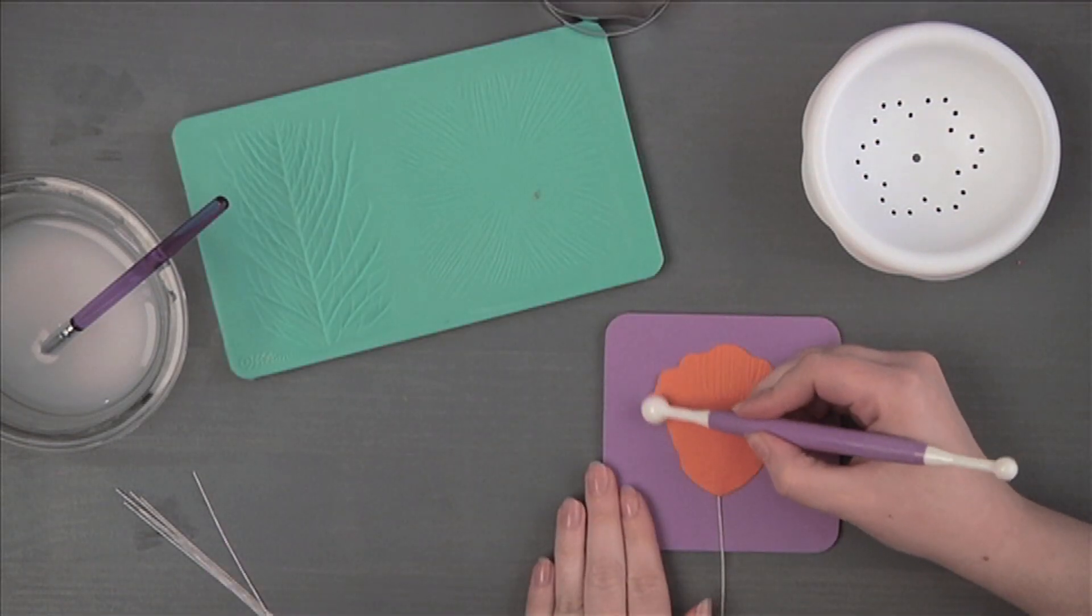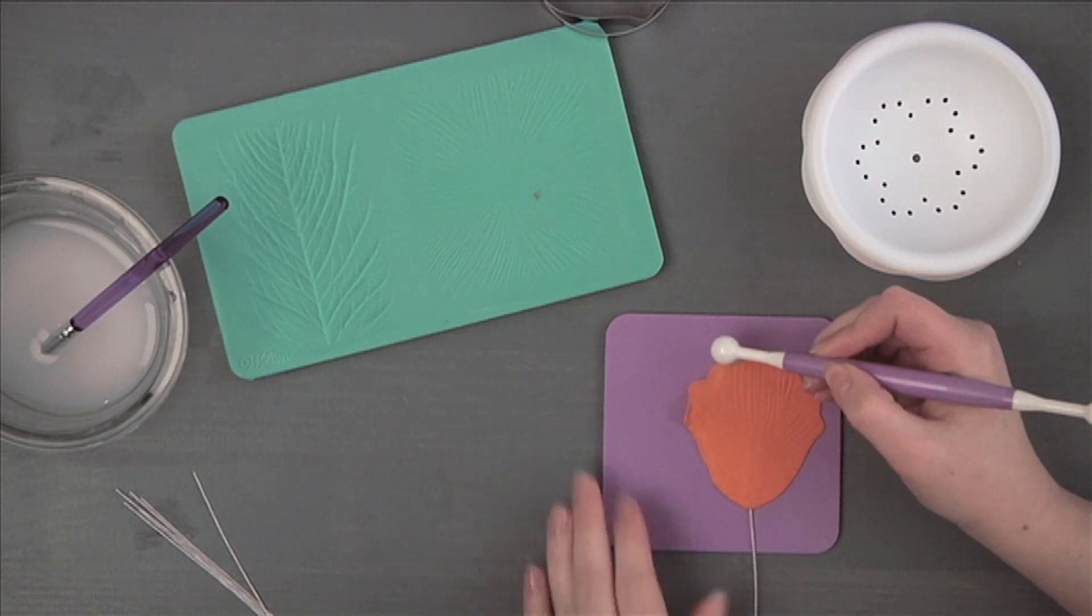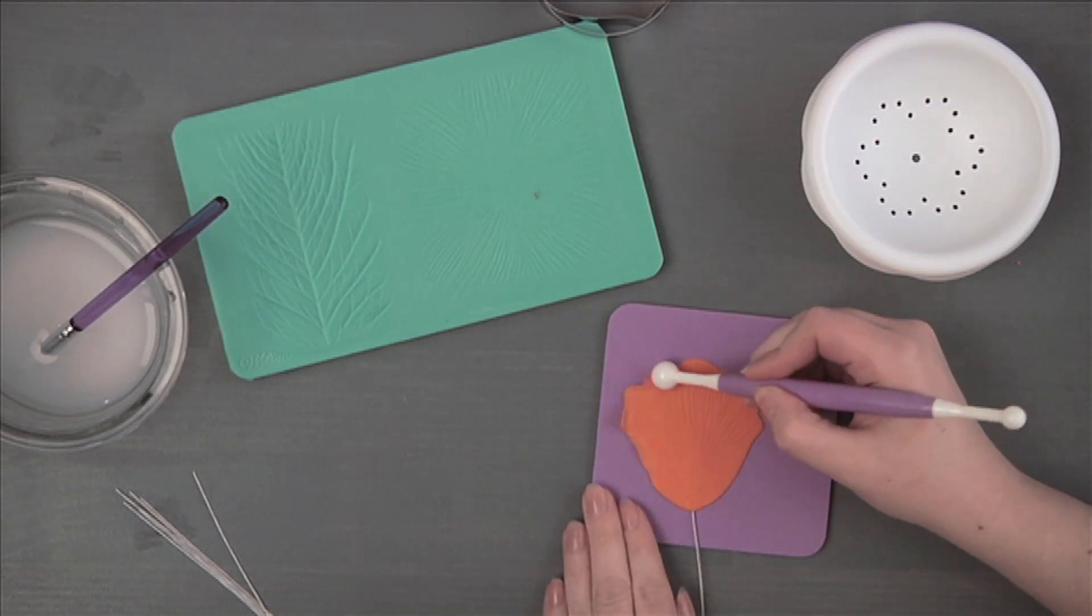Place the petal imprint side up on cornstarch dusted medium foam. Using a ball tool, soften the outer edge of the petal to ruffle.